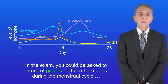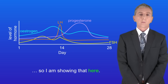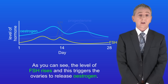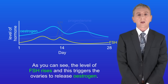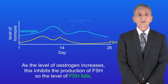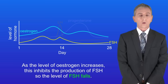In the exam you could be asked to interpret graphs of these hormones during the menstrual cycle. As you can see, the level of FSH rises and this triggers the ovaries to release estrogen. As the level of estrogen increases this inhibits the production of FSH, so the level of FSH falls.